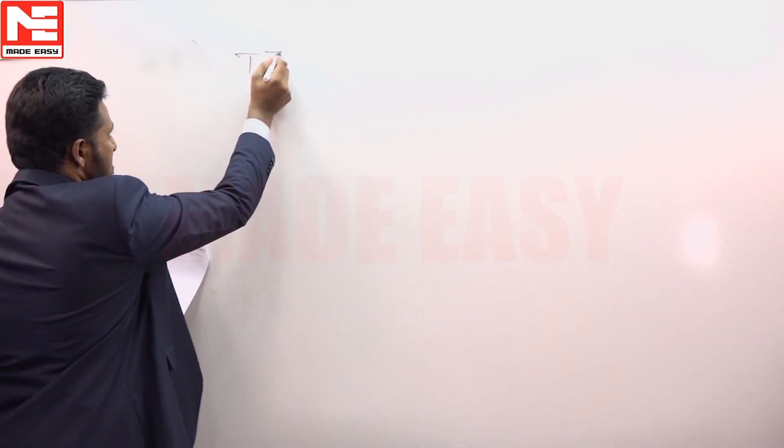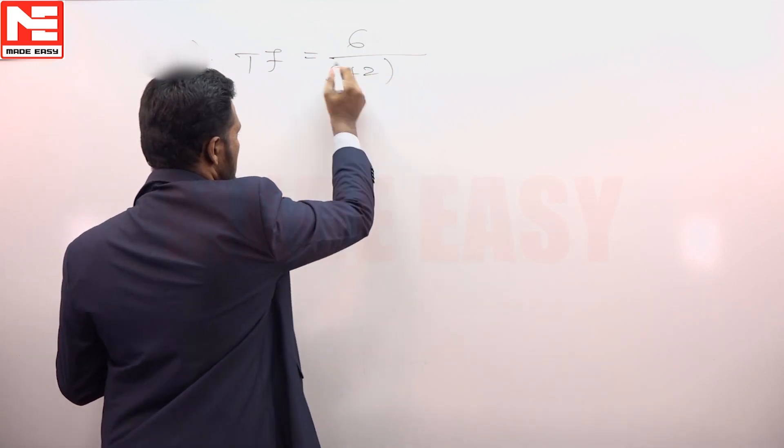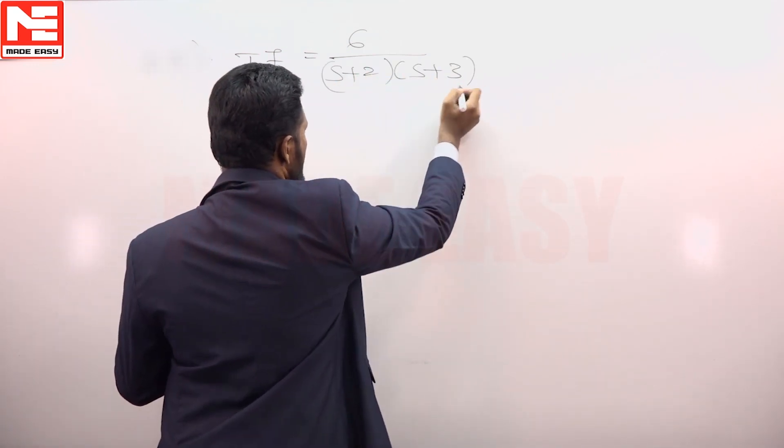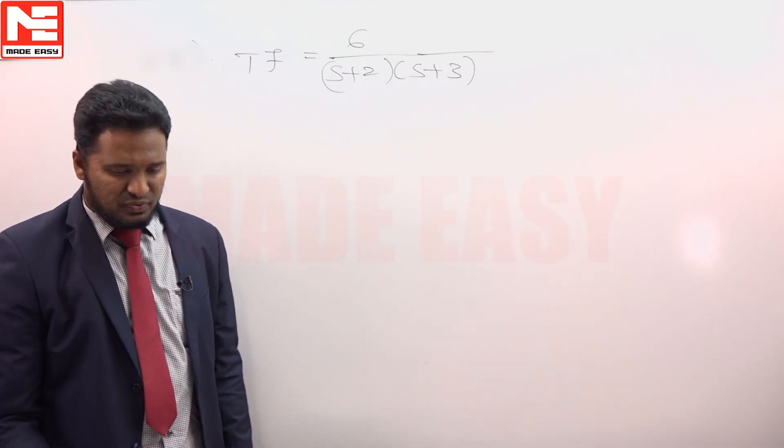Closed loop transfer function of a system is given as 6 upon s plus 2, s plus 3. The question is to identify the polar plot. Polar plot is obtained using open loop transfer function.